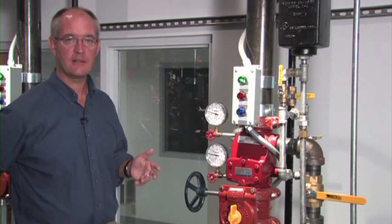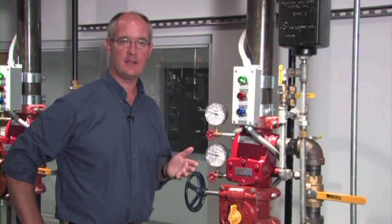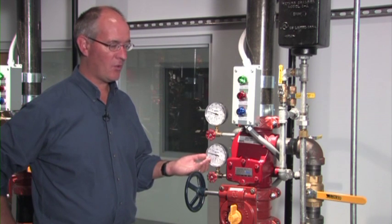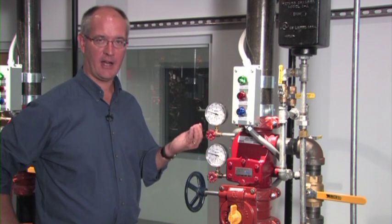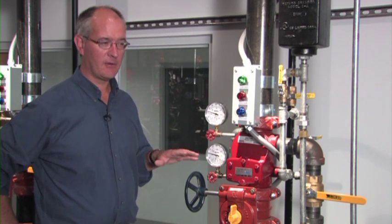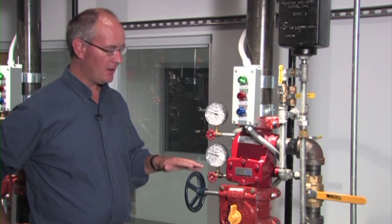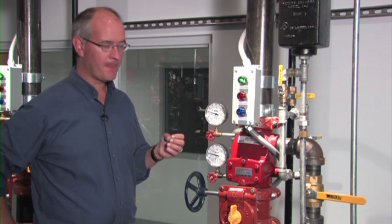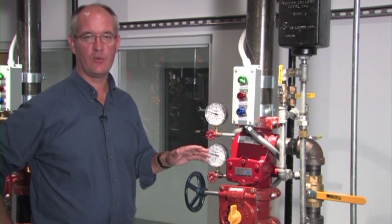The alarm check valve provides two things. It checks water flow into the system, meaning the water pressure will be higher on the system side in general than it will be on the supply side.